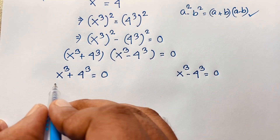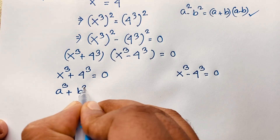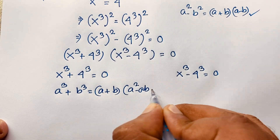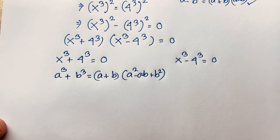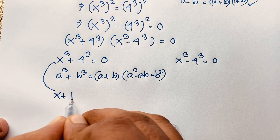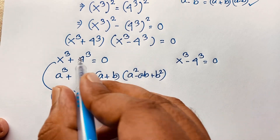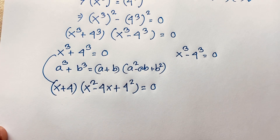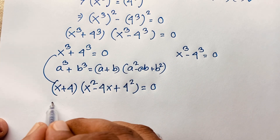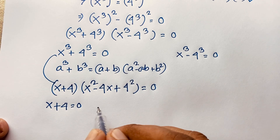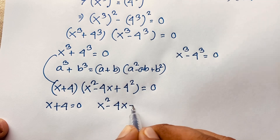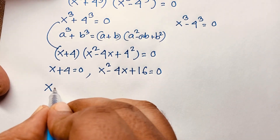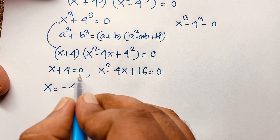Now for the first case, we know that a cube plus b cube equals a plus b times a squared minus ab plus b squared. Applying this formula here, it will be x plus 4 times x squared minus 4x plus 16 is equal to 0. So the first sub-case gives x plus 4 equals 0, meaning x is equal to negative 4.